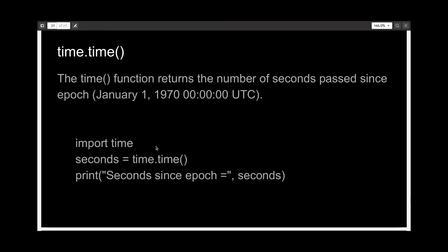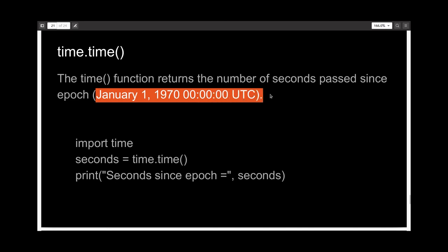The first function we want to discuss is time(), which expects no arguments and returns the number of seconds passed since the epoch. The epoch here is January 1st, 1970, 00:00:00 UTC.